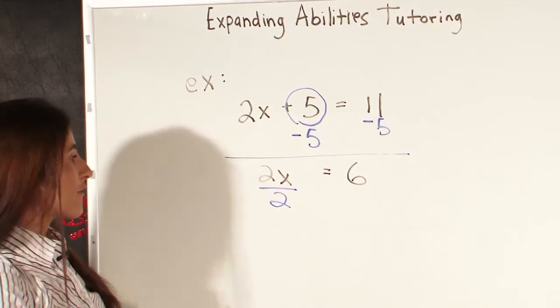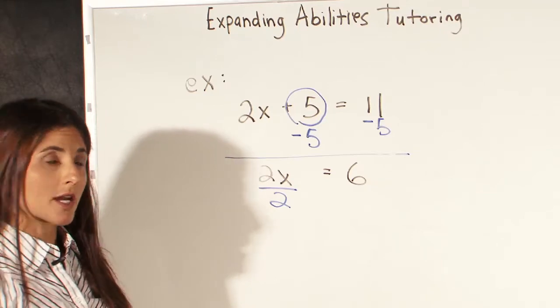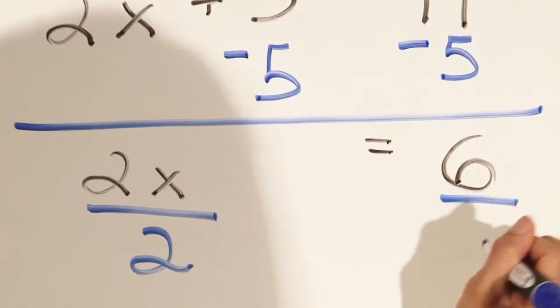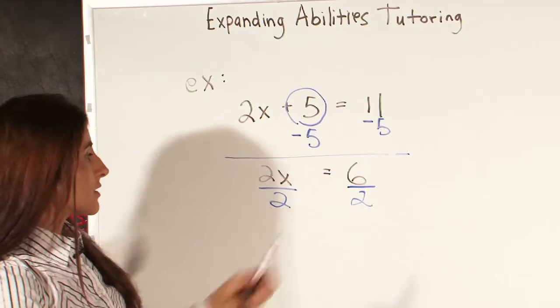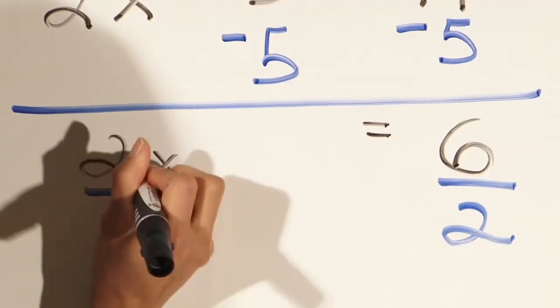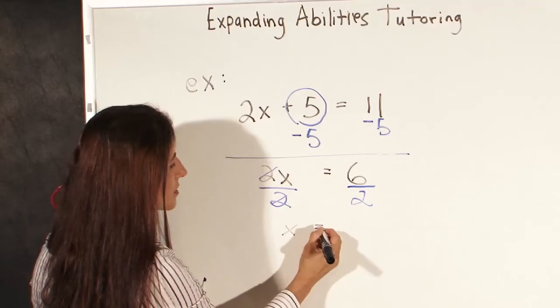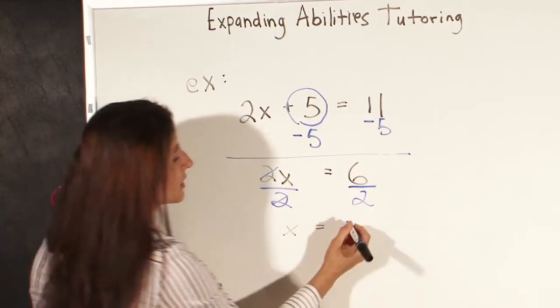And again, remember, whatever we do on one side of the equal sign, we must also do on the other side of the equal sign. So we're going to divide by 2 under the 6 as well. And 2 divided by 2 is 1, so these two things cancel, and we're left with x equals 6 divided by 2 is 3.